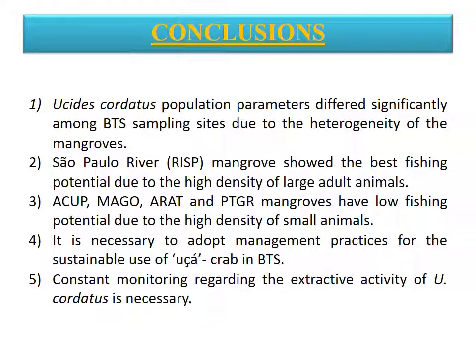Our data allowed us to conclude that population parameters differed significantly among BTS sampling sites. Due to the heterogeneity of the mangroves, São Paulo River mangrove showed the best fishing potential, while Acupi, Maragojipinho, Aratuípe, and Ponta Grossa mangroves have low fishing potential. It is necessary to adopt management practices and monitoring regarding the extractive activity of Ucides cordatus.